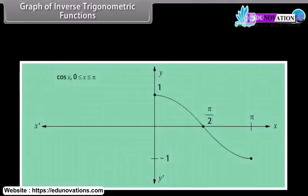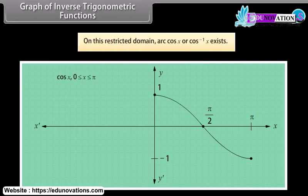The derivations of the graphs of arc cos x and arc tan x are similar to that of arc sin x. In both instances, intervals must be restricted. For arc cos x, we use the restricted piece on [−1, 1], on which arc cos x (cos⁻¹ x) exists.